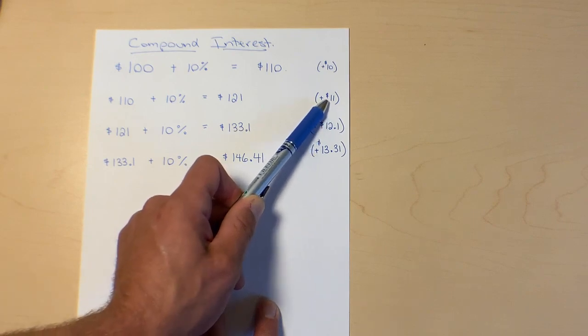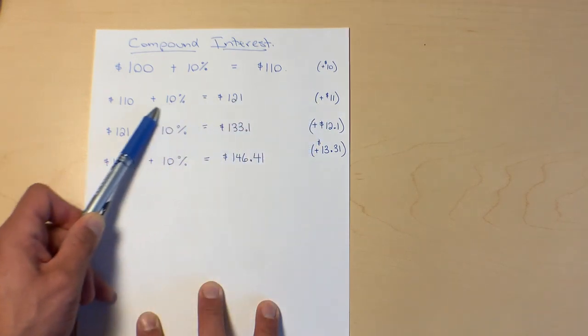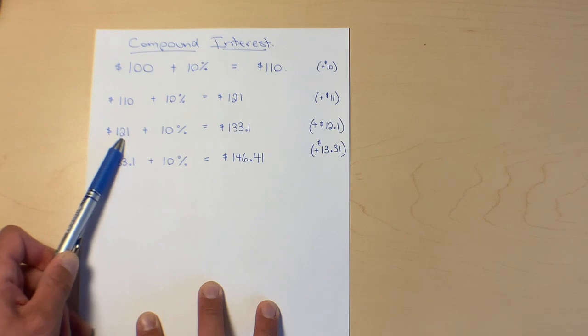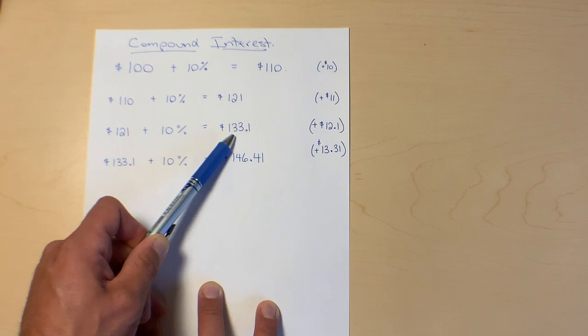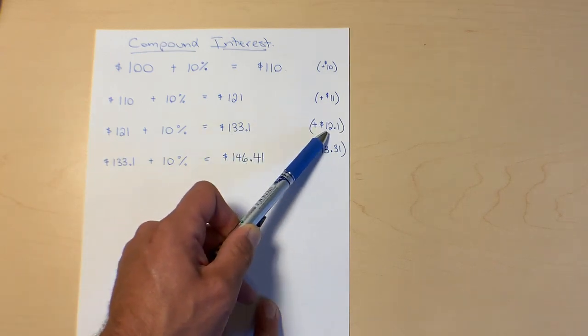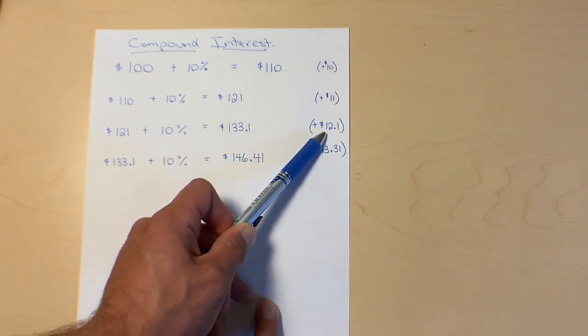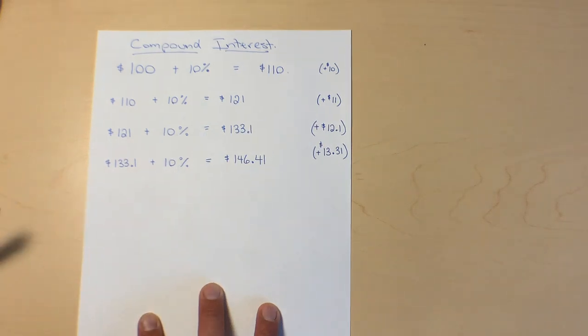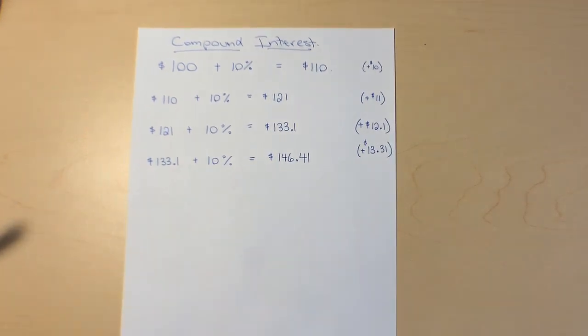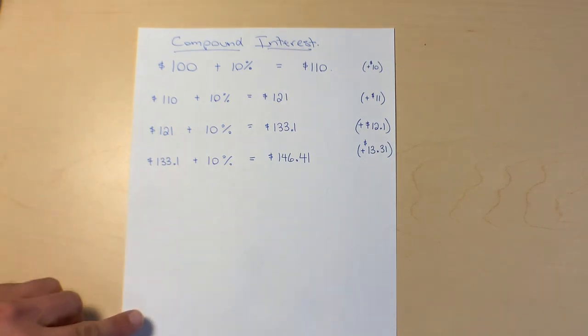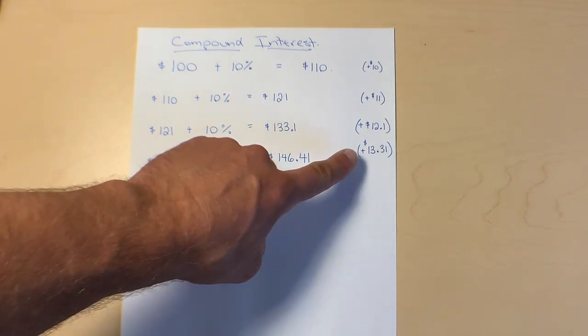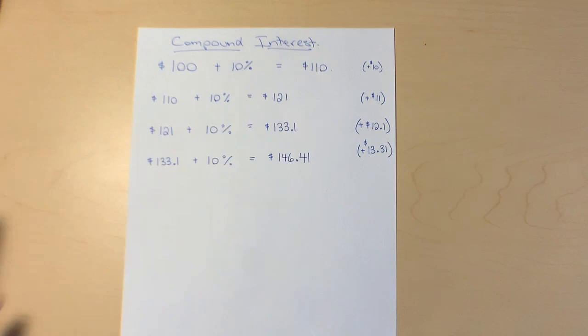If we add that to our principle, the beginning of the third year we have $121. If we add 10% again we're going to have $133. That's going to give us a gain of $12.10. So you can see that the more and more we calculate this, imagine we had many many years here, you would be gaining more in interest every single year.